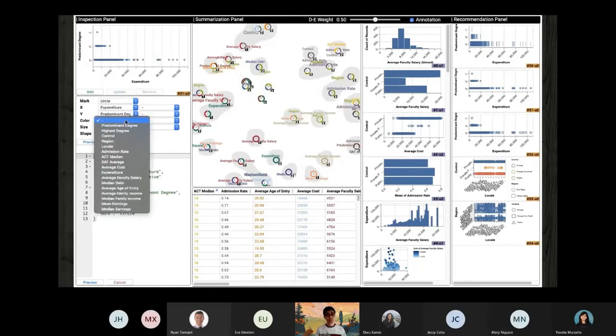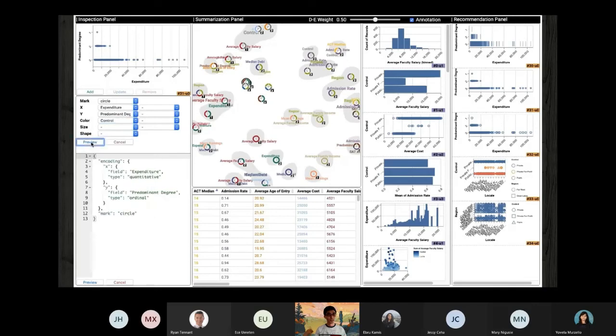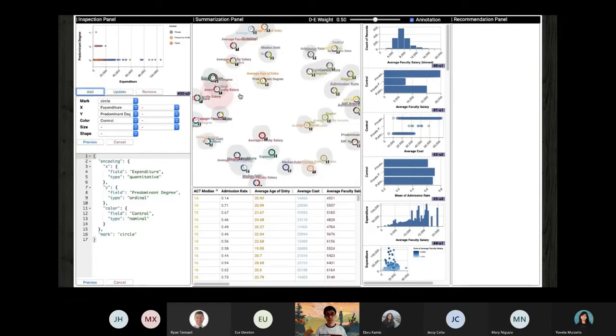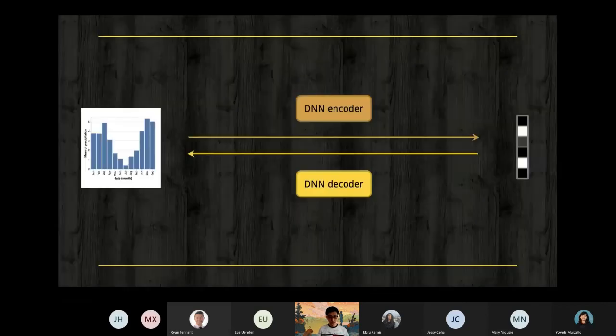If you are satisfied with certain recommendations, you can still tweak because machines are not perfect. You can tweak the machine-generated charts and add it to your exploration history. That is the very short introduction to the tool. A lot of technical details can be found in the paper.